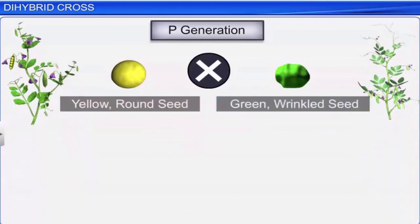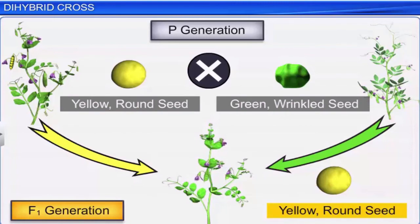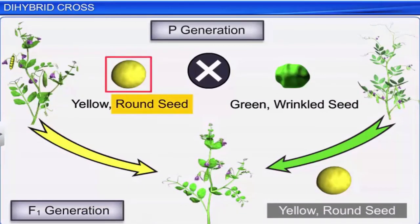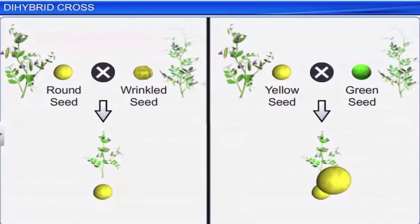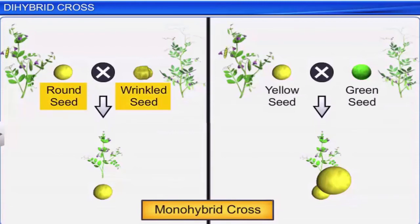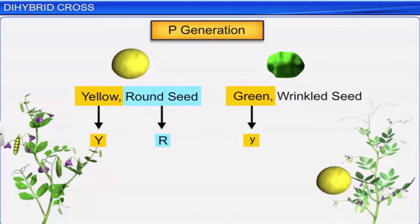This experiment conducted by Mendel resulted in a pea plant that produced yellow and round seeds in the F1 generation. The round shape is dominant over the wrinkled shape, and yellow color is dominant over green. In Mendel's dihybrid experiment, capital Y denotes dominant yellow seed color, small y for recessive green, capital R for round seed, and small r for wrinkled seed.